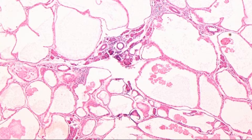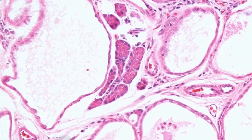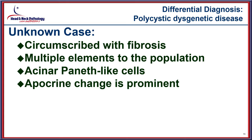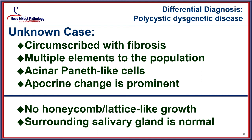This condition is rarely encountered. The intercalated ducts show very wide cystic open spaces while the acinar units remain normal but the intercalated ducts are completely dilated, lining the periphery of these spaces. In our case, we don't have a honeycomb or lattice-like growth, and the surrounding salivary gland is normal, helping to exclude polycystic dysgenetic disease.